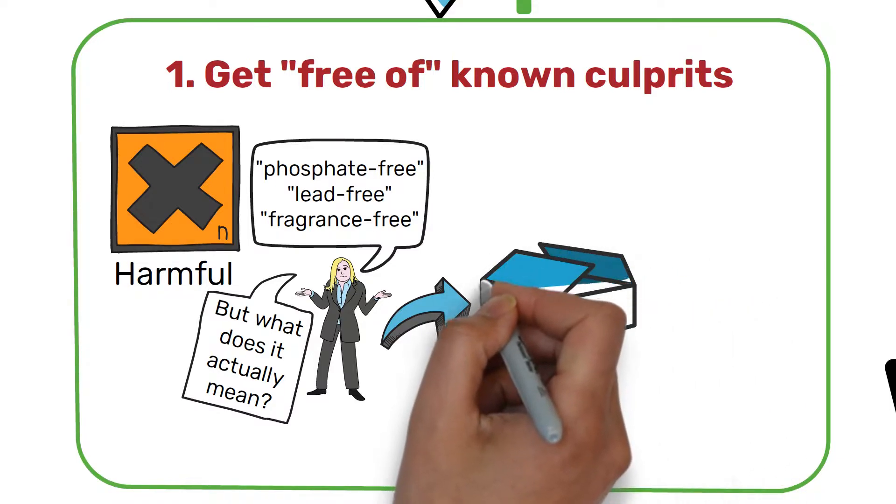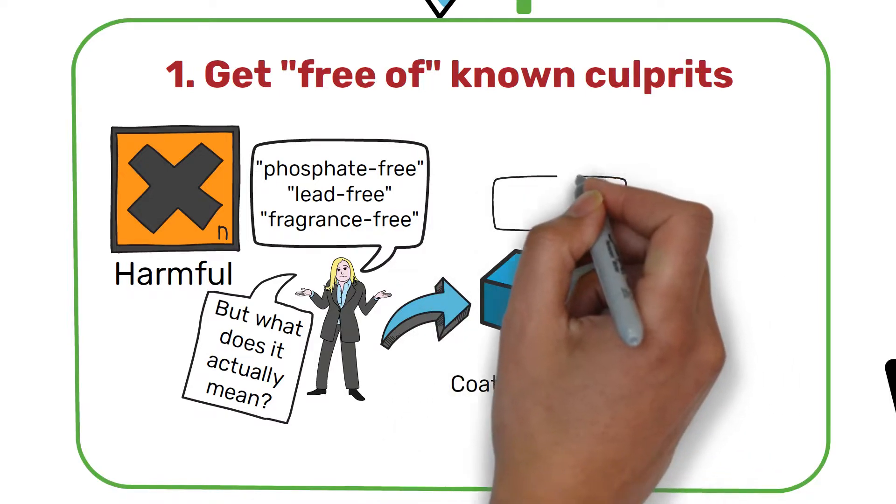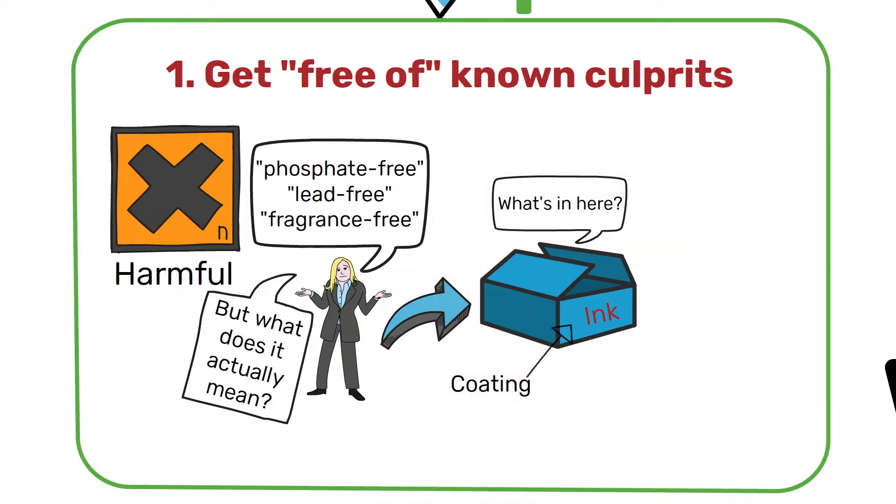Moreover, the package could contain other harmful substances such as harmful coating or heavy metals in the ink used to print on it. It is possible that the manufacturer increased sales and saved money by simply announcing that the packaging was culprit-free, but these culprits could get mixed in the food product itself, which can be very costly for both manufacturers and consumers.